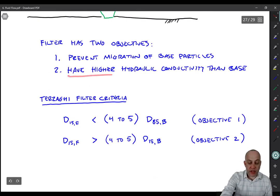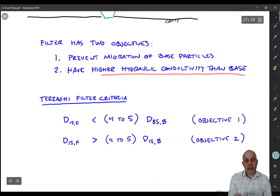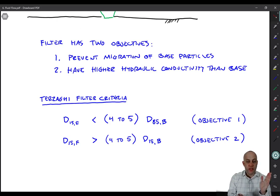And then the filter also has to have higher hydraulic conductivity than the base. It wouldn't make any sense to build a filter that is lower permeability than the base, for example. Then it wouldn't be a filter at all. It would be a drainage impediment.